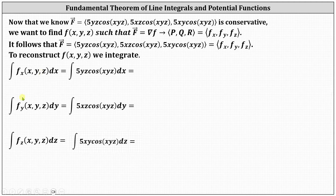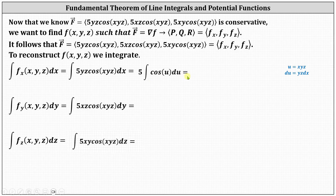We integrate p with respect to x, treating y and z as constants. This requires u-substitution where u equals xyz, so du equals the partial of xyz with respect to x times dx, which gives us yz dx. Performing the substitution, we now have the integral of 5 cosine(u) du, which equals 5 sine(u) plus c. In our case, this is 5 sine(xyz) plus a function of y and z — not just a constant — because when integrating with respect to x, we only recover the x part and could be missing y and z terms.